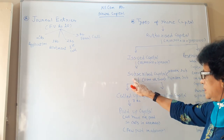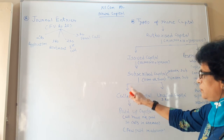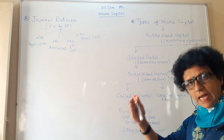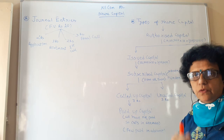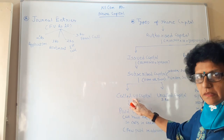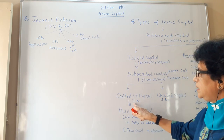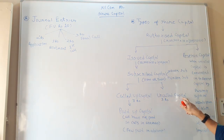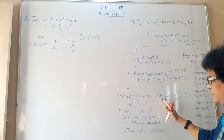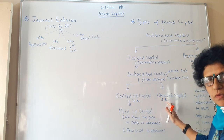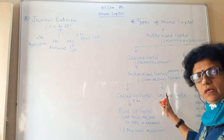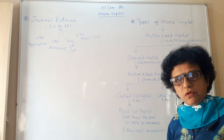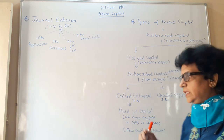That is issued capital and subscribed capital. Now, out of the 10 rupee face value, what you actually ask the investor to pay is called called-up capital. Suppose the face value is 10 rupees but you call only 7 rupees — that is the called-up capital. The remaining 3 rupees is uncalled capital, because the management thinks they don't need it just now. Since the company has not asked for it, investors need not pay it yet.